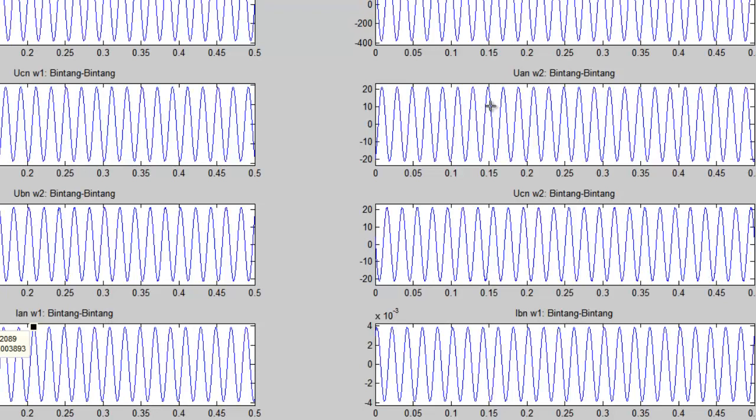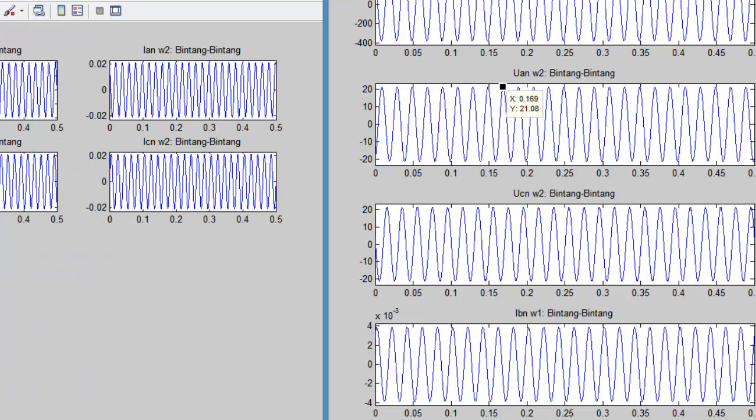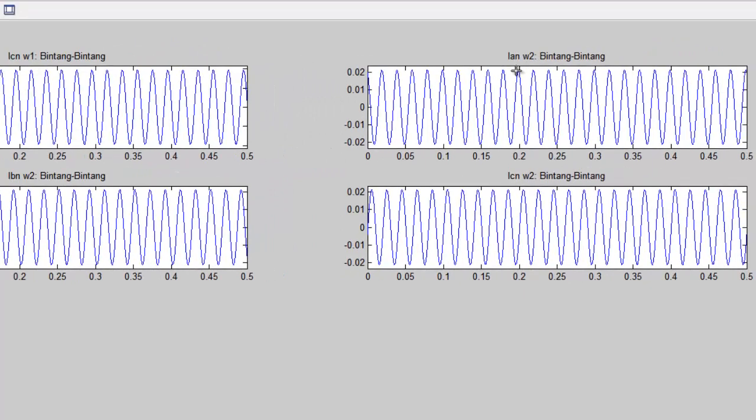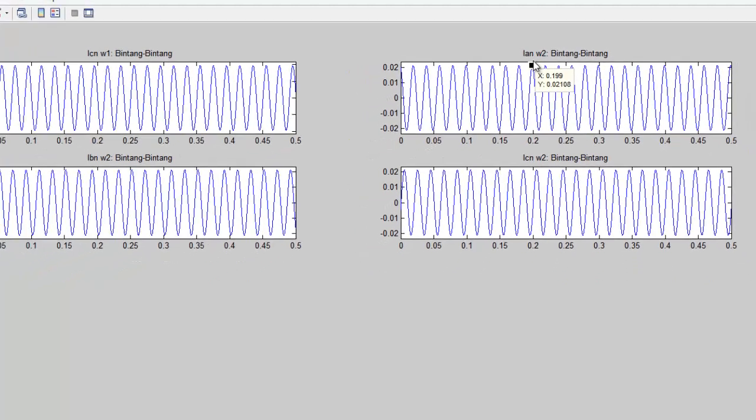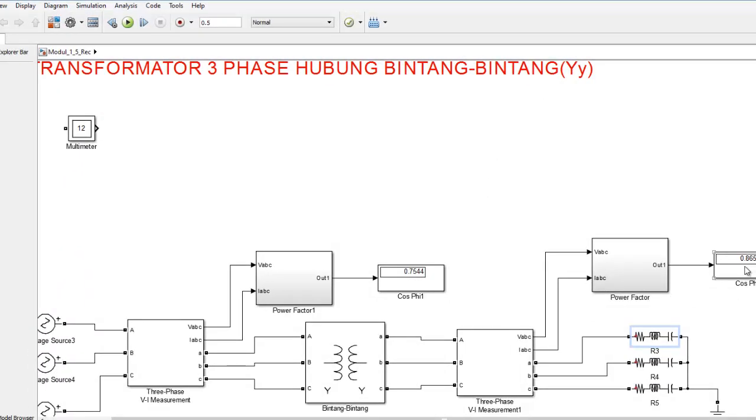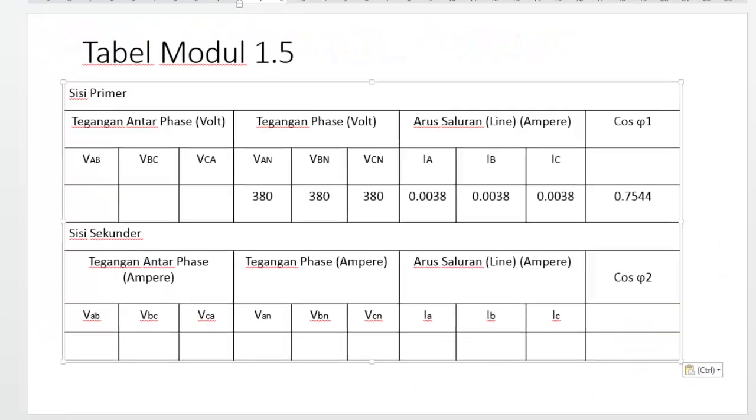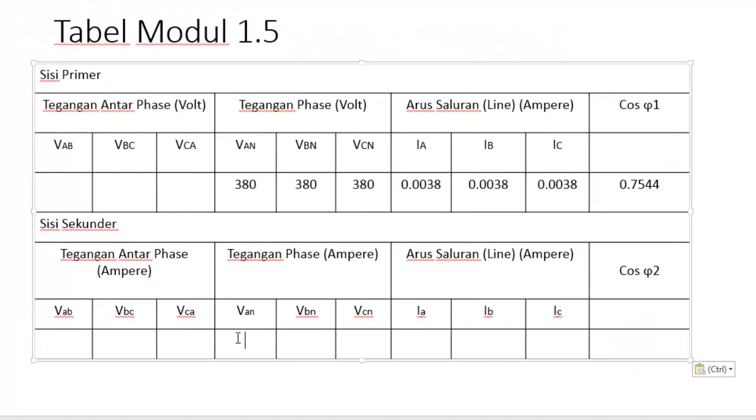Untuk tegangan di sisi sekunder kita coba lihat di salah satu fasenya, disini adalah 21.08 volt untuk tegangannya. Kemudian untuk arusnya ini ada di grafik satunya, untuk arusnya di sisi sekunder diperoleh arusnya adalah 0.021 ampere. Untuk cos φ di sisi sekunder adalah disini 0.865.